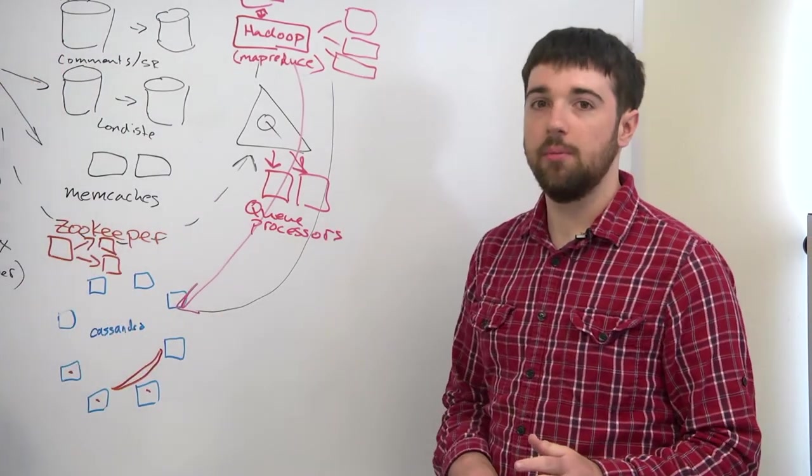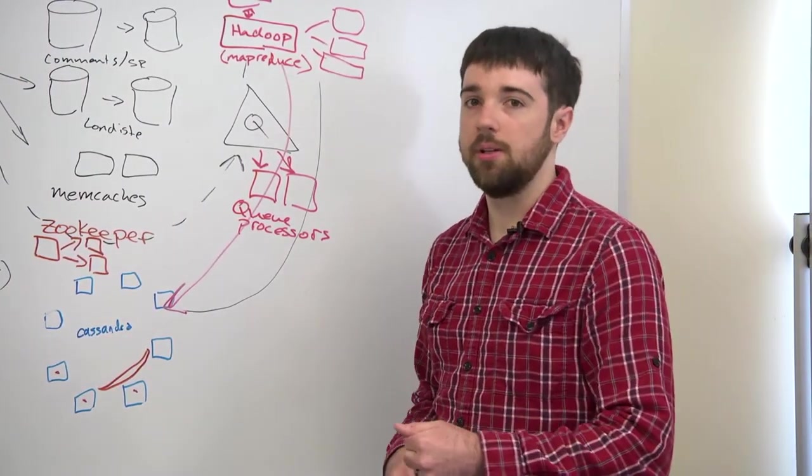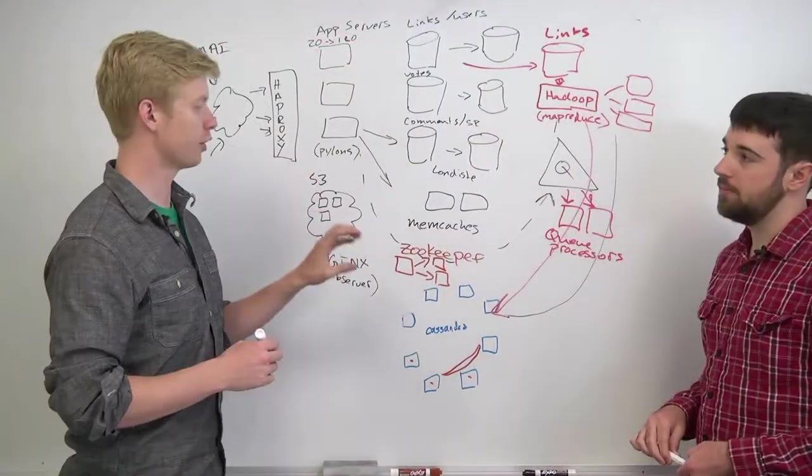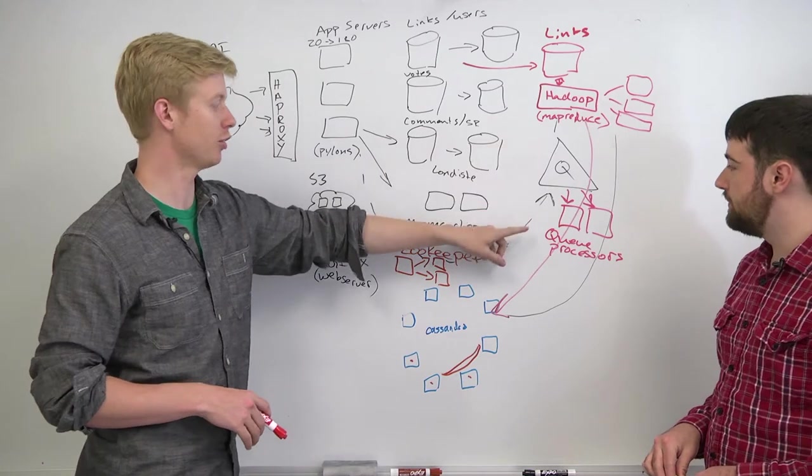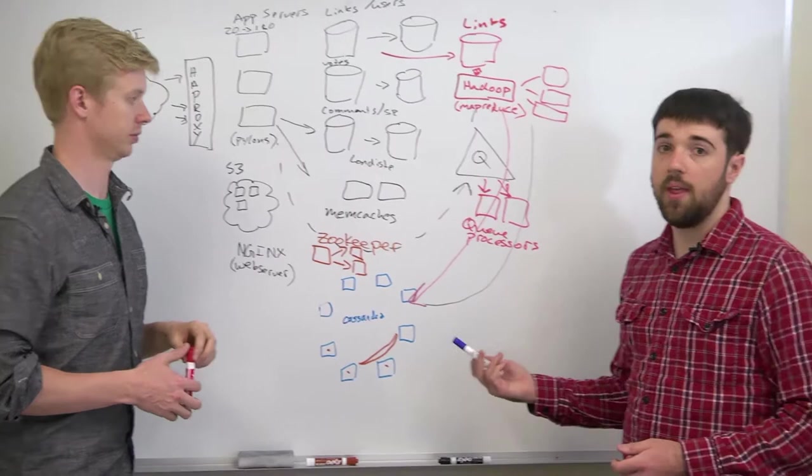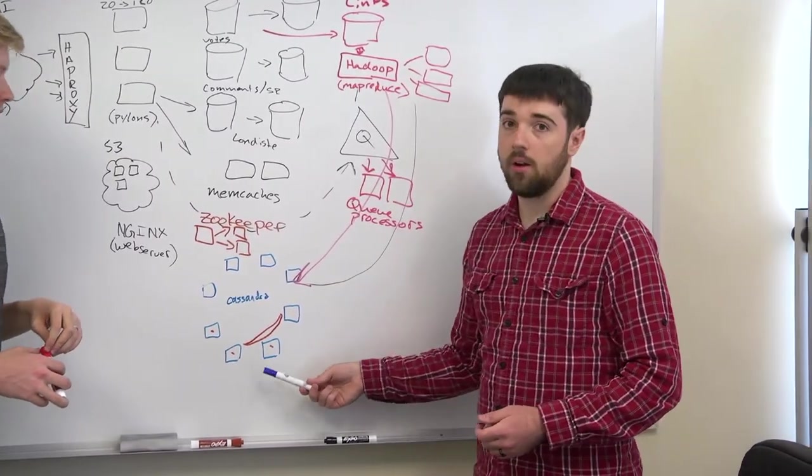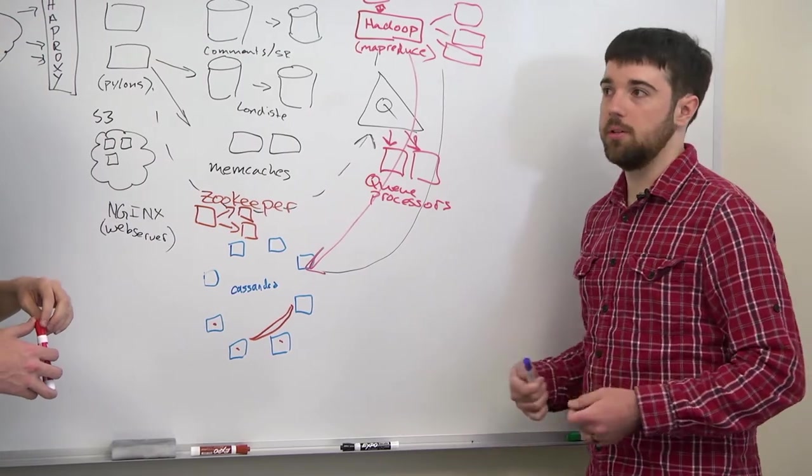And they were all fighting each other for those locks. Just halving the number of those queue processors actually sped up queue processing in general. You need enough queue processors to handle the depth of the queue, but if you have too many, they spend too much time fighting each other. One of the ways we're working on that is we're getting rid of the locking in the Cassandra stuff and trying to get rid of locks as much as possible in general.